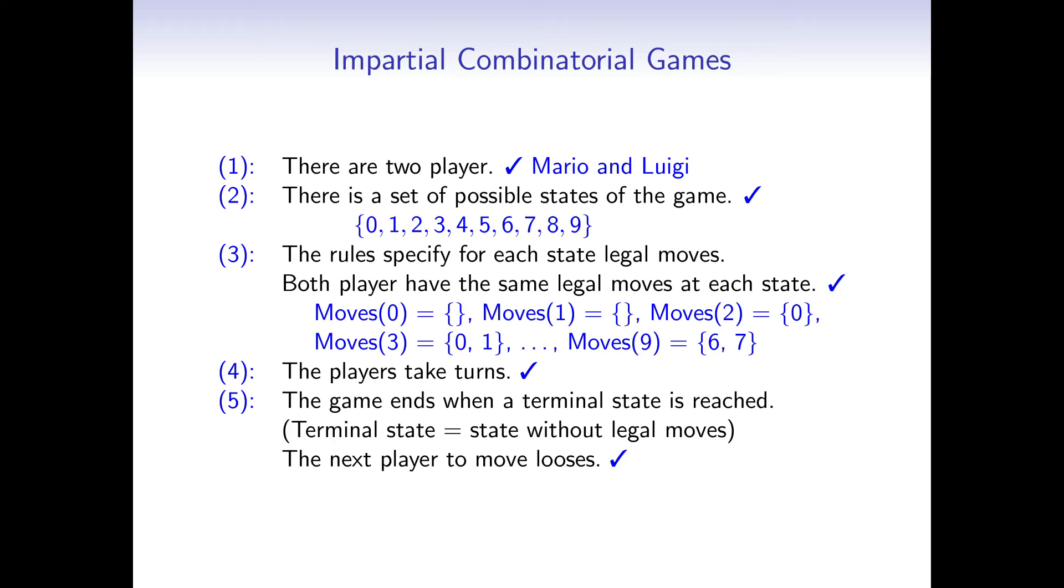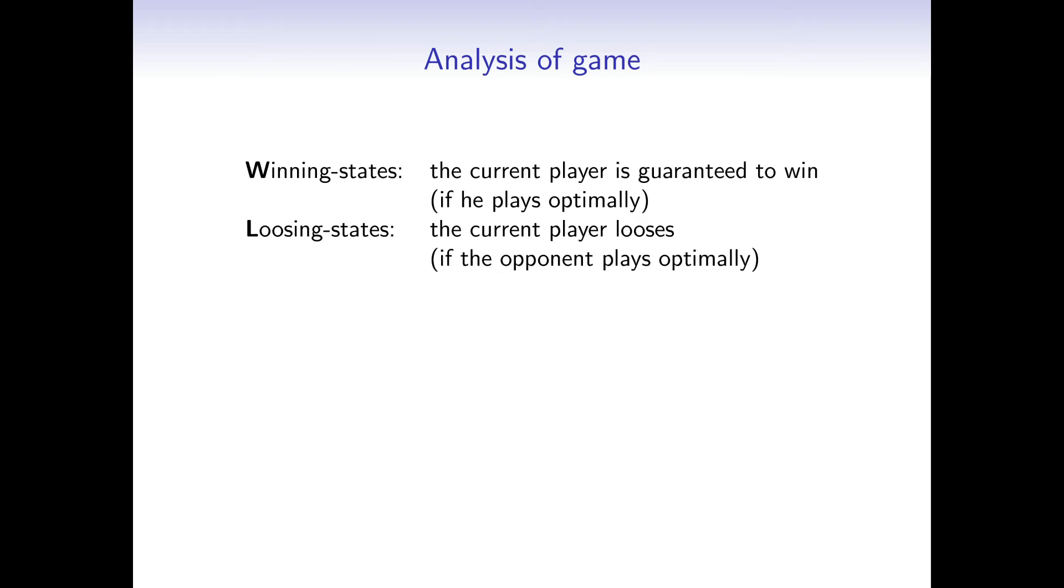As it turns out, every impartial combinatorial game has an optimal strategy. To compute the optimal strategy, we have to define winning states and losing states. A state is a winning state if the current player is guaranteed to win, assuming he plays optimally. And a state is a losing state if the current player loses. He has no chance of winning the game, assuming that the opponent plays optimally.